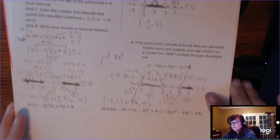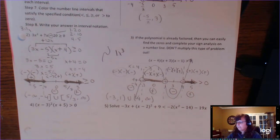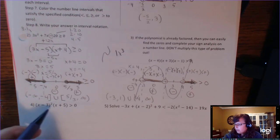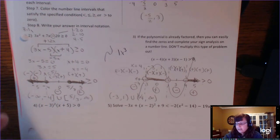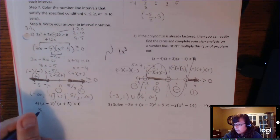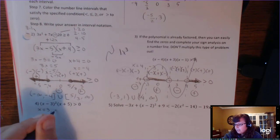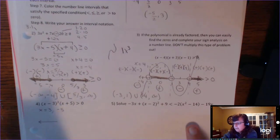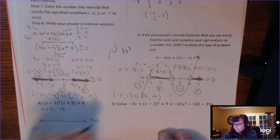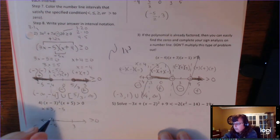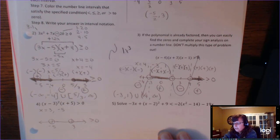Be careful, though, because you might have multiplicities to deal with. Here's a polynomial that is already factored, so you skip to step 3: find the zeros. The zeros are 3 and −5. Plot the number line with −5 to the left and 3 to the right, with open circles because it doesn't say greater than or equal to zero.